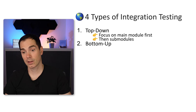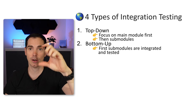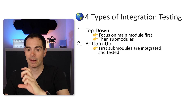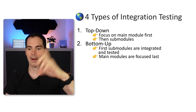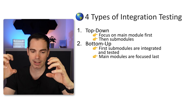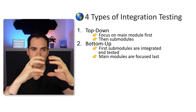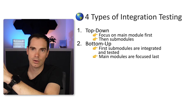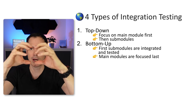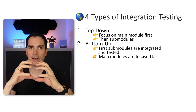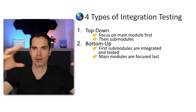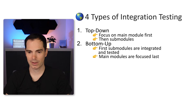Bottom-up is the opposite. You first concentrate on the sub-modules in your application and your tech stack, integrate them, test them together, and then focus on the main modules on top. Depending on your system architecture, you might have small sub-modules that you can first integrate, and if they work together you build up towards the larger modules — like towards the pyramid.